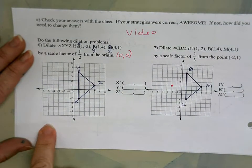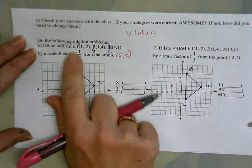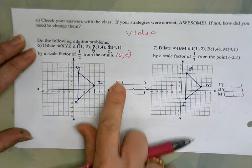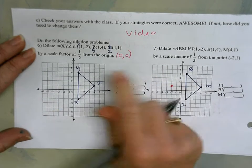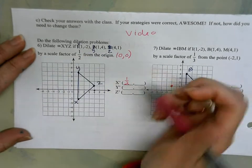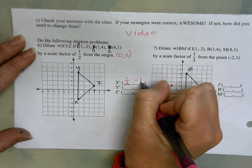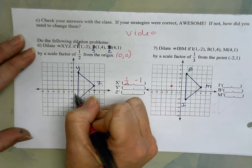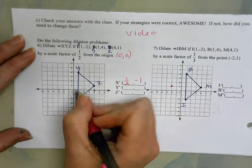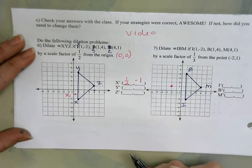So for six, we could take—and I'm sorry for the XYZ IBM confusion—if we take 1 and cut it in half we're gonna get 1/2, and if we take -2 and cut it in half we're gonna get -1. So over 1/2 and down 1, and that's gonna be our new X.